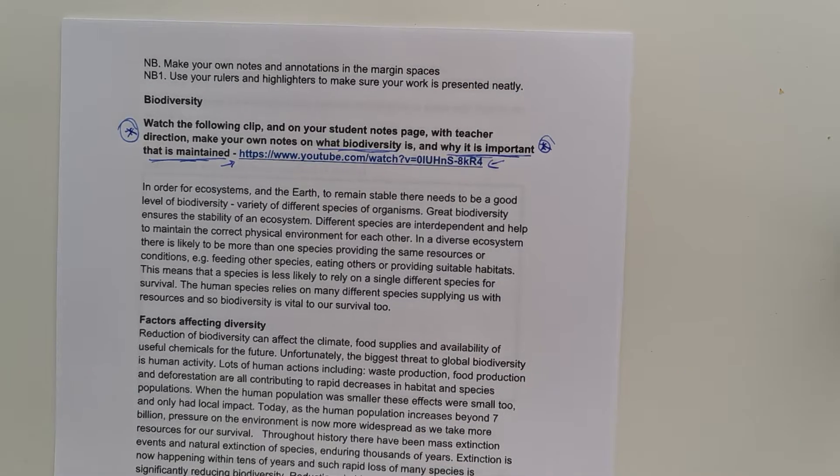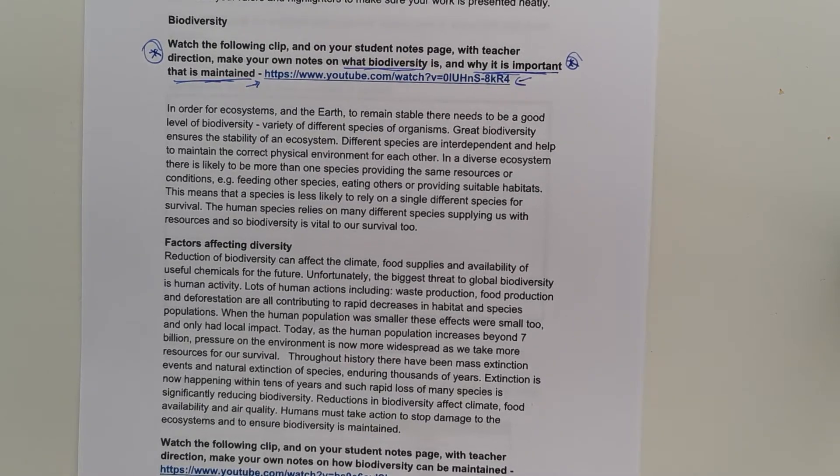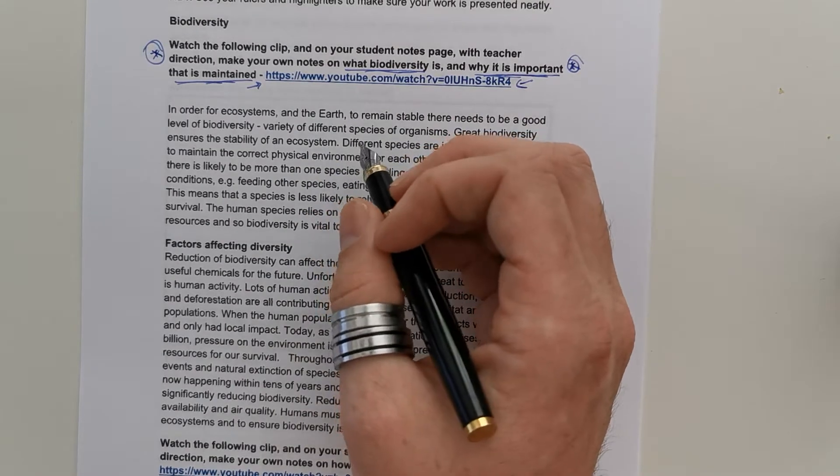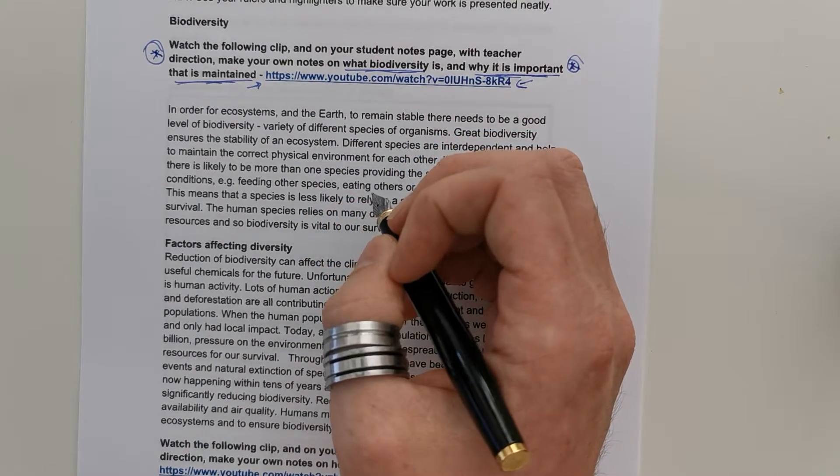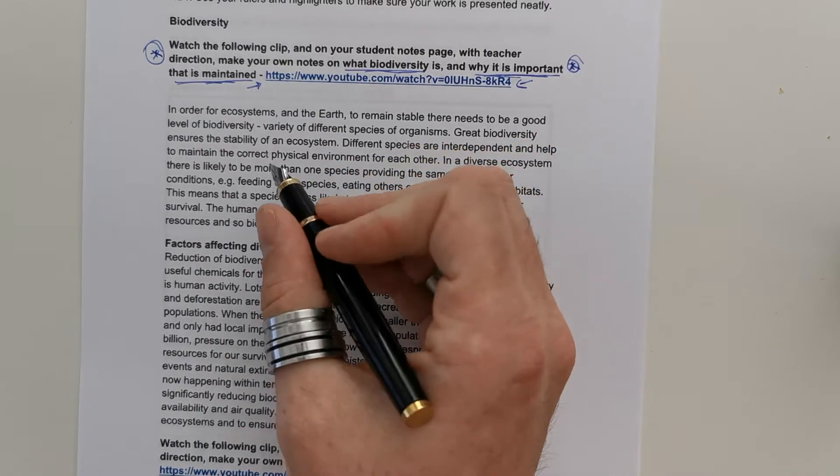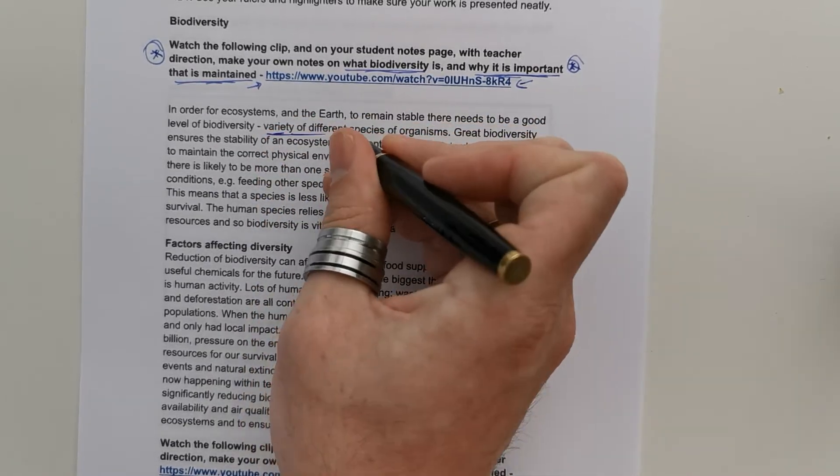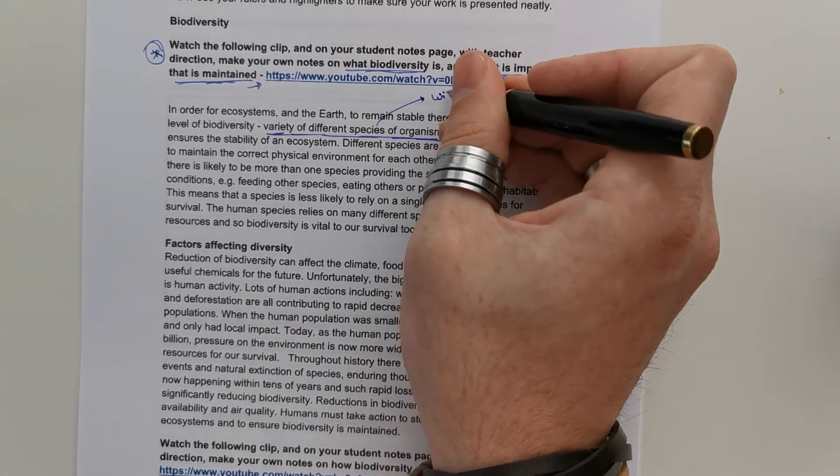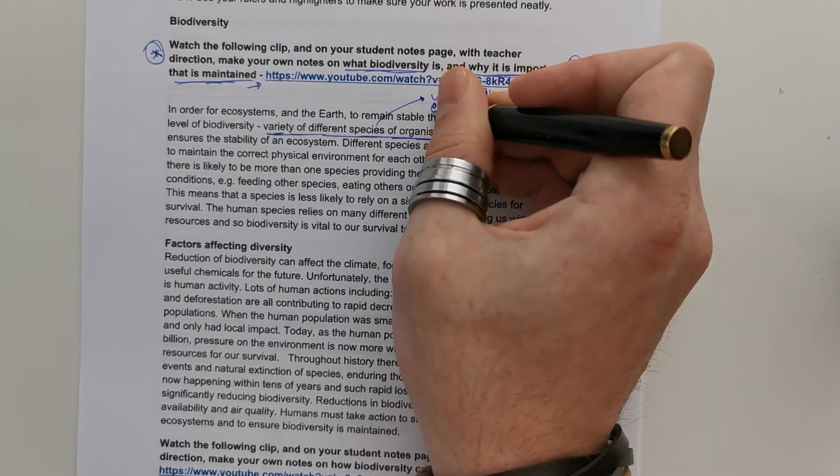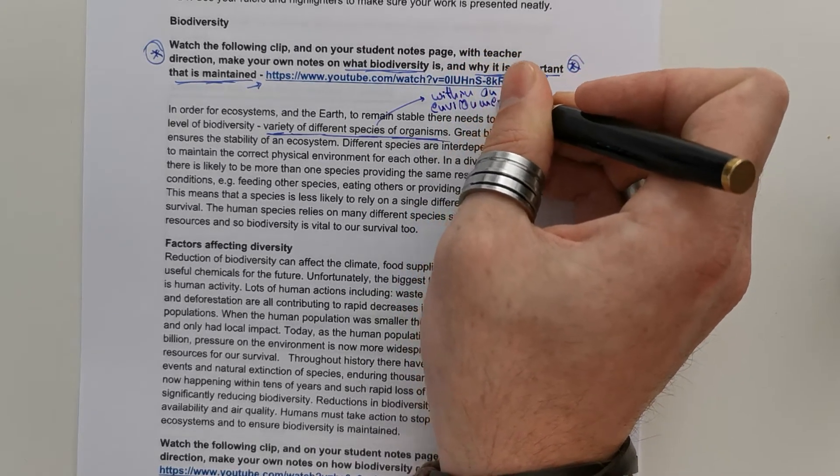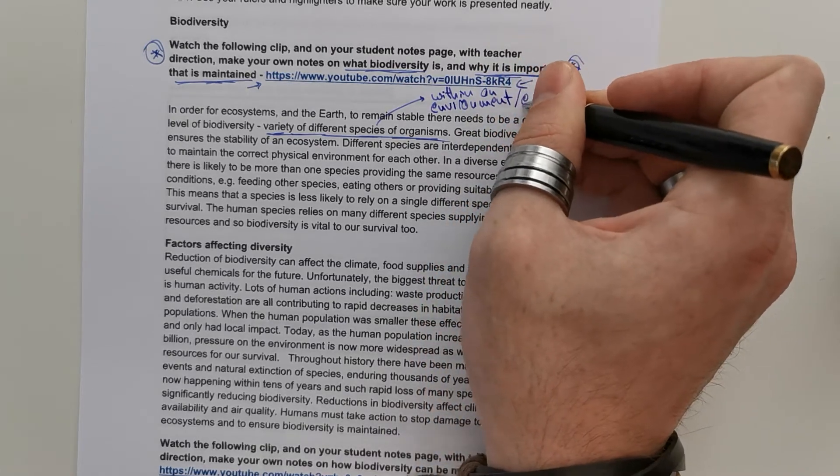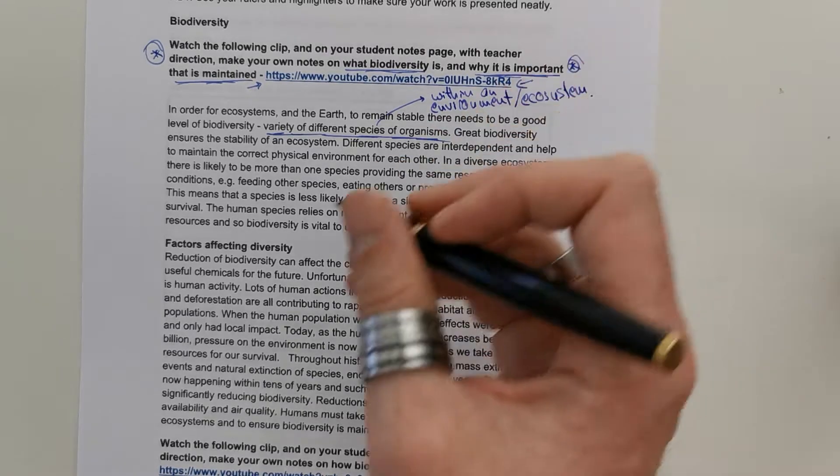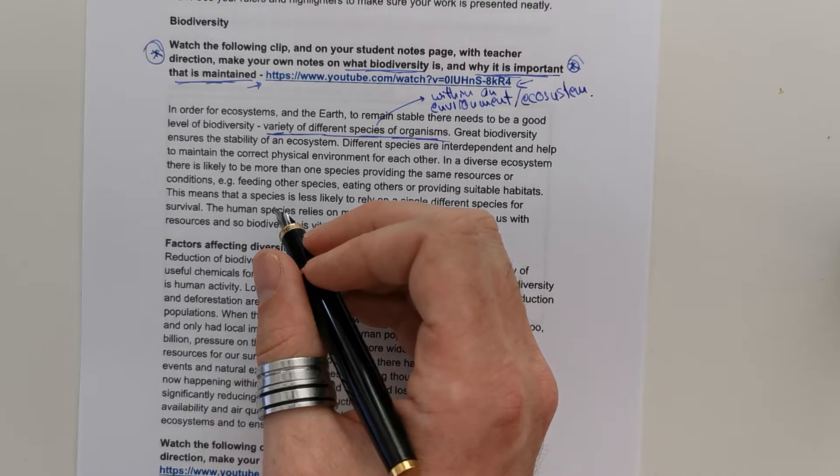So, now you should have unpaused the video, and let's dive into the text in a bit more depth. So, starting at the top here. In order for ecosystems and the Earth to remain stable, there needs to be a good level of biodiversity, which is the variety of different species of organisms within an environment or an ecosystem.